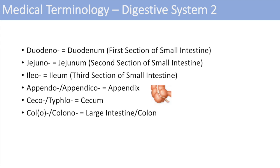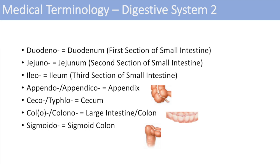Colo or colono denotes the large intestine or colon — colitis is inflammation of the large intestine, and a colonoscopy is a visual inspection via scope into the colon. Sigmoido stands for the sigmoid colon — a sigmoidoscopy looks specifically at the sigmoid colon. The last part of the digestive system is anal or procto, standing for the anus or rectum. You might have heard of a proctologist, a specialist in this area of the digestive system.